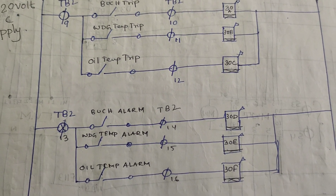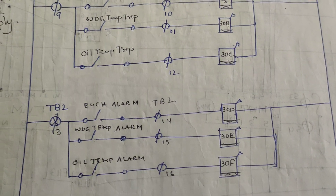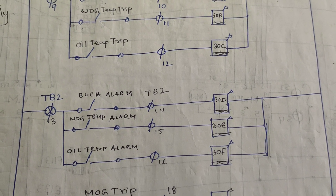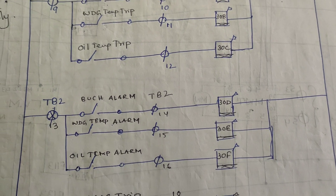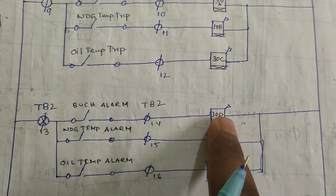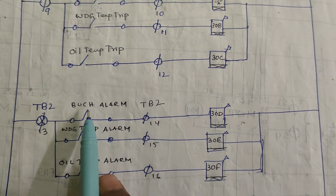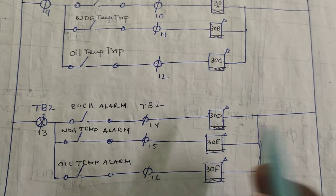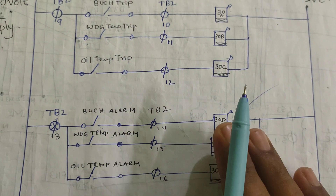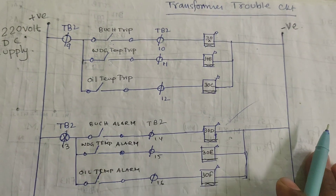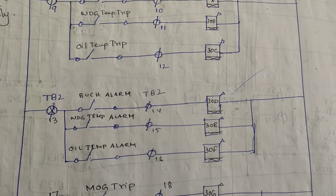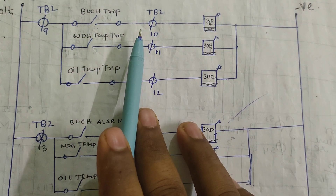If required, switch off and isolate the transformer on both sides. Using a discharge rod, discharge the transformer, then climb on the transformer body and release the Buchholz valve to release the gas. Once gas is released, the NC contact returns to NO, the relay resets, and the transformer is out of danger. This is why it is called a gas-actuated relay.